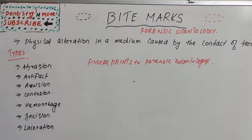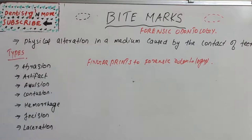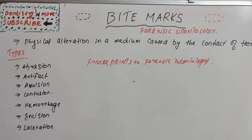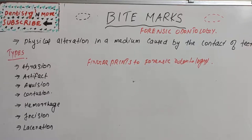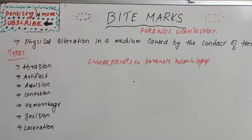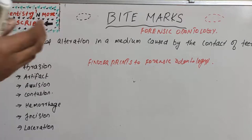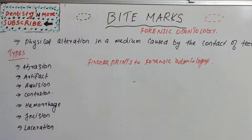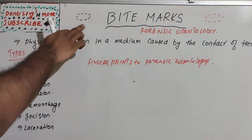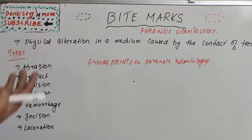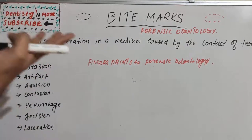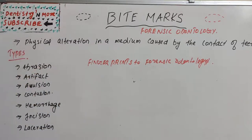Bite marks are nothing but a physical alteration in a medium caused by the contact of teeth. It is a representative pattern left in an object or tissue by the dental structure of an animal or human. When we bite into a tissue or even take a bite of an apple or fruit, we leave behind a teeth pattern — that is nothing but a bite mark. In forensic odontology, the same concept is applied.